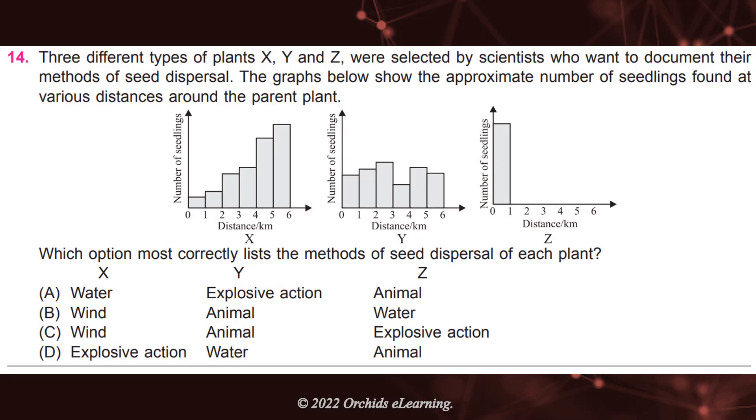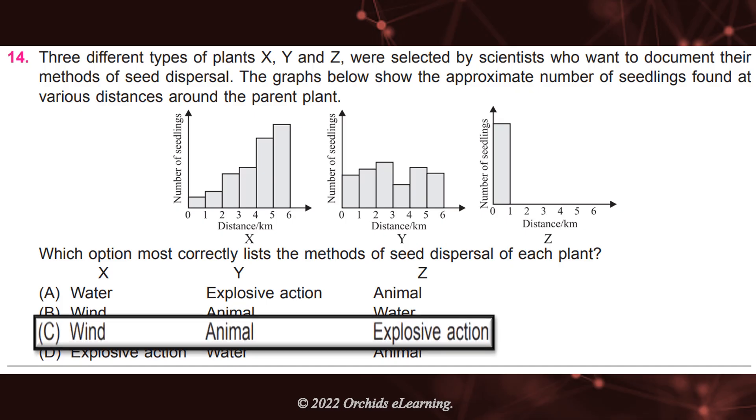Three different types of plants X, Y, and Z were selected by scientists who want to document their methods of seed dispersal. The graphs below show the approximate number of seedlings found at various distances around the parent plant. Answer: C, X is wind, Y is animal, and Z is explosive action.